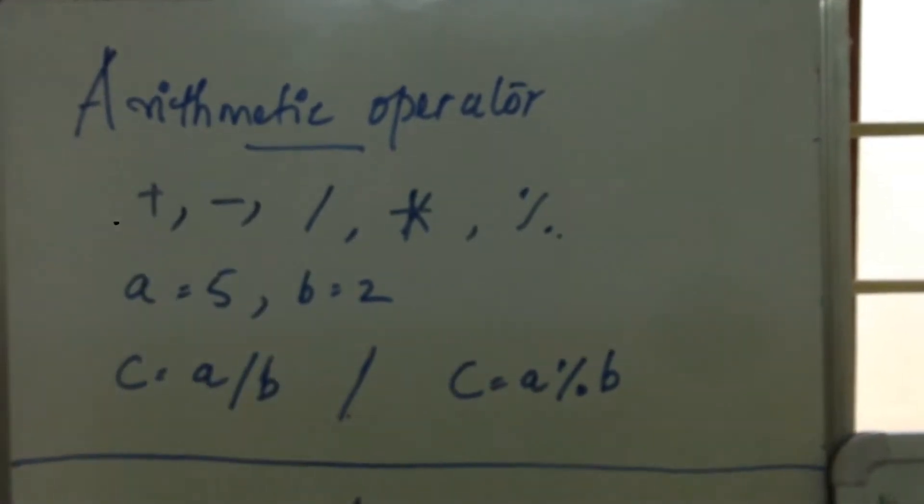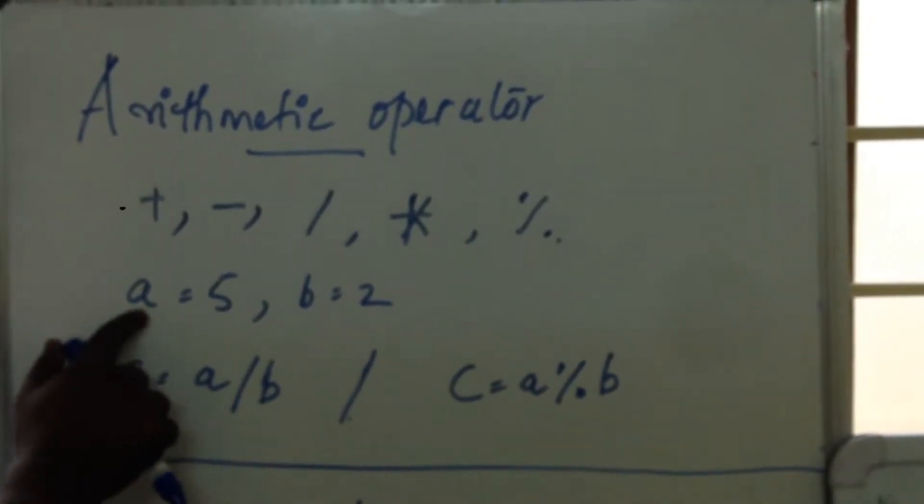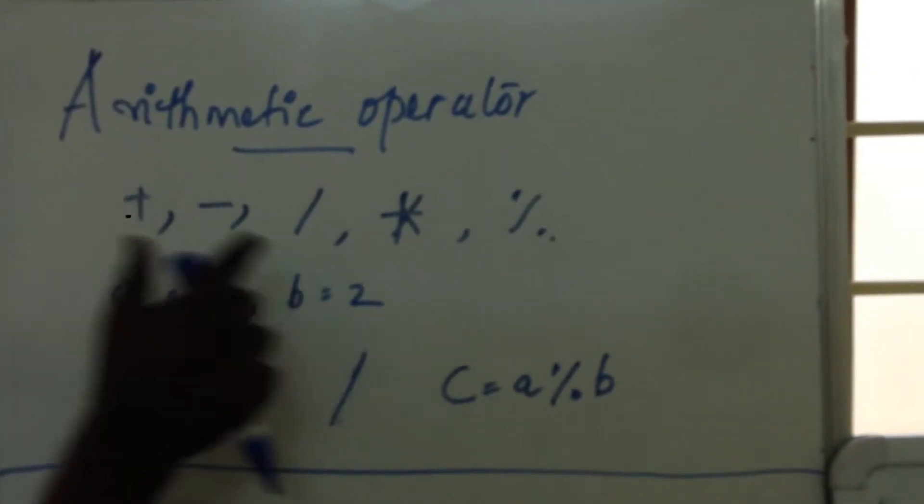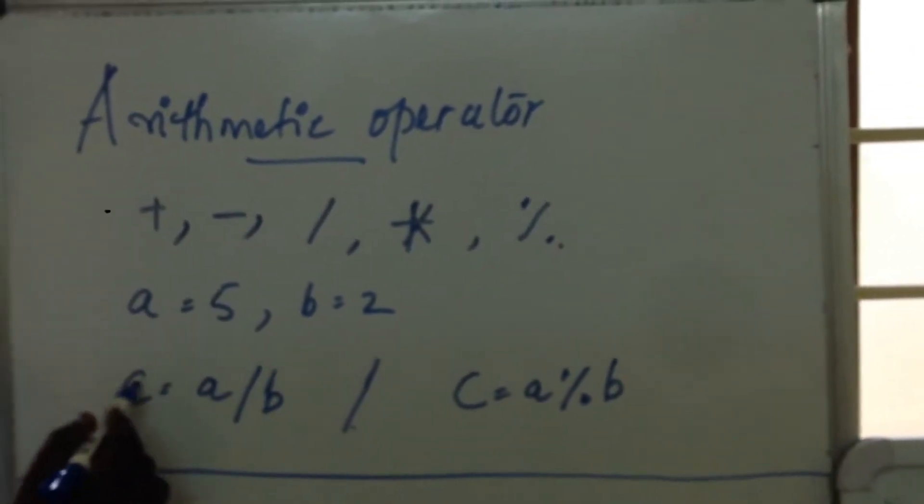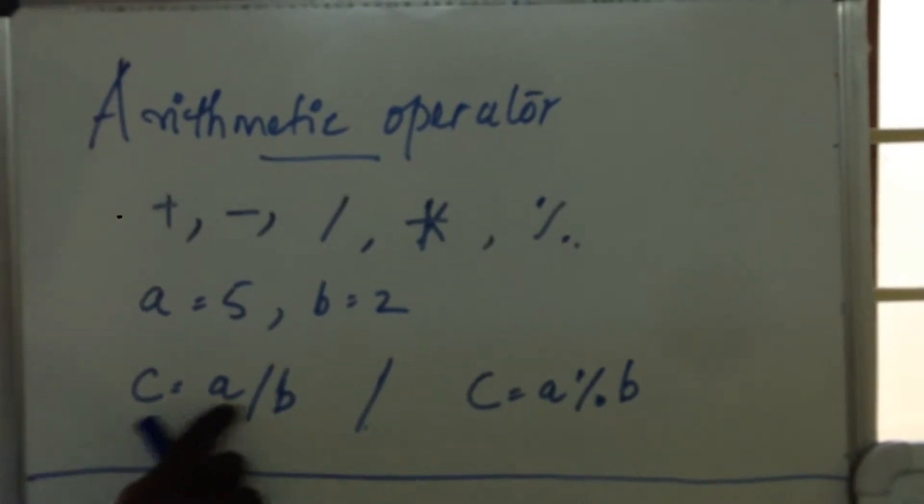In division, for example, a equals 5, b equals 2. If c is an integer, suppose c can only store integer values, then a by b.